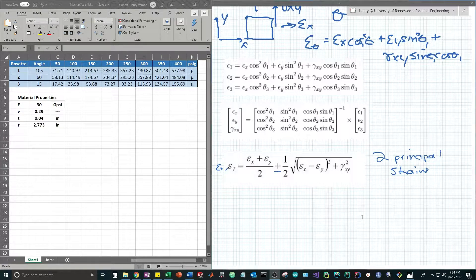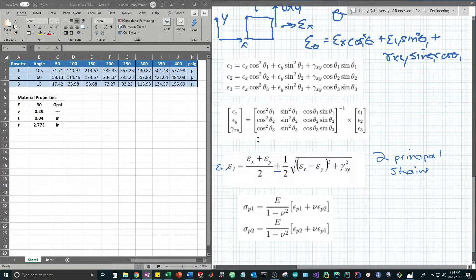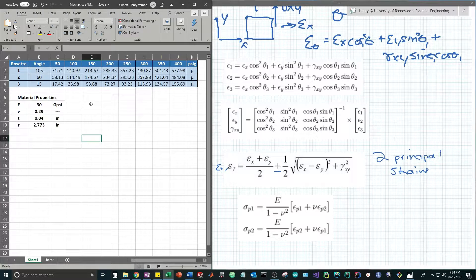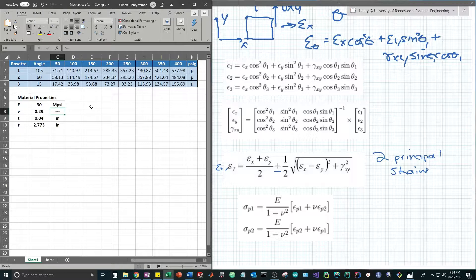To finally get the principal stress, we're going to use Hooke's law which relates the principal strains and material properties to the experienced principal stresses. We have a lot of equations to calculate so let's get started in Excel by calculating this inverse matrix. This should actually be mega psi because that's 10 to the 6th.